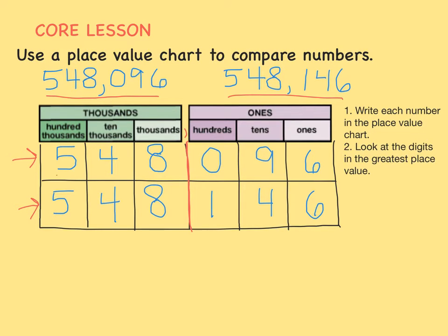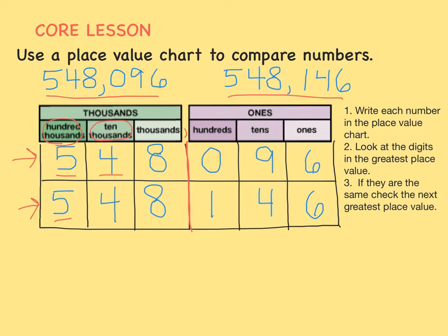Both of these numbers have a 5 in the hundred thousandths place. Since they are the same, we will move to the next greatest place value, which in this case is the ten thousandths place. We see this number has four ten thousandths, and this number has four ten thousandths. So we'll have to move to the next greatest place value, the thousandths place.